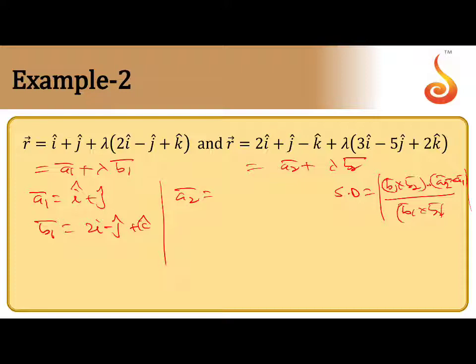ā₂ is 2î + ĵ - k̂. b̄₂ is 3î - 5ĵ + 2k̂.